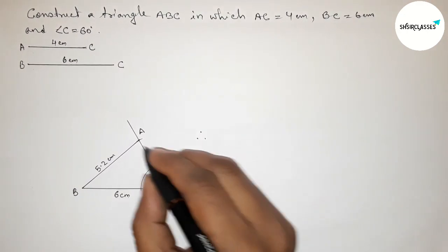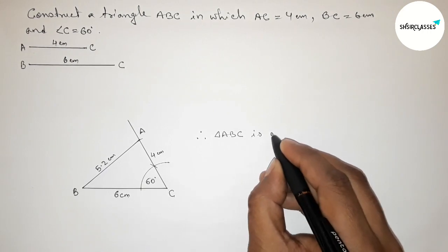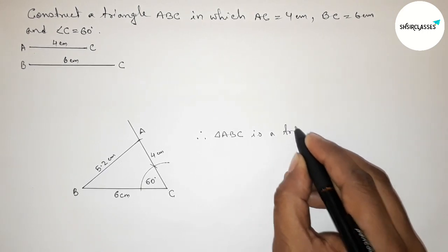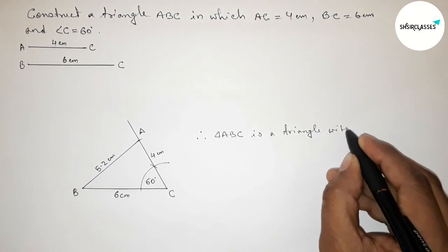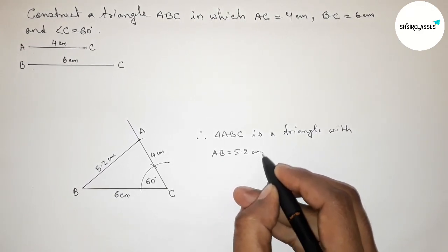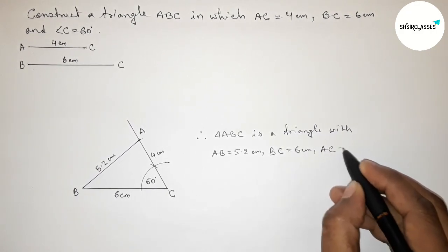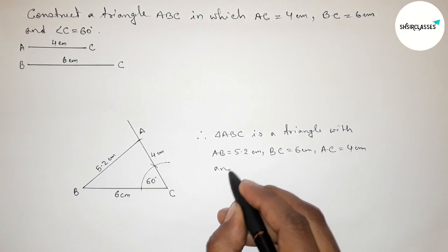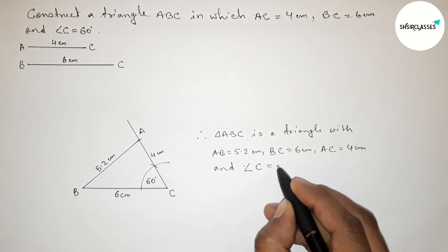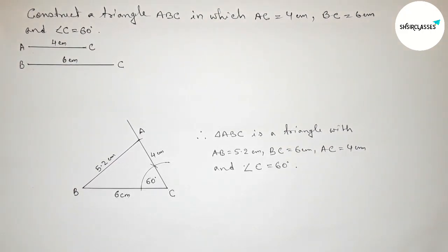Therefore, triangle ABC is a triangle with side AB equals 5.2 centimeter, BC equals 6 centimeter, AC equals 4 centimeter, and angle C equals 60 degrees. That's all. Thanks for watching — if this video is helpful to you, please share it.